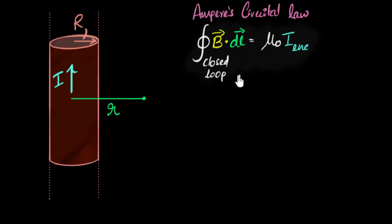What does this say? Just a quick refresher. It says choose a closed loop and walk along that loop and calculate this integral, and that should always equal mu naught times the current enclosed by the loop.